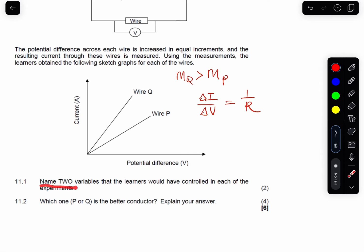Now it says name two variables that the learners would have controlled in each of their experiments. In other words, they're asking for the fixed variable, the control variable in this experiment. And obviously it's the temperature, and we can say the thickness, the thickness or the length of the wire. One of the last two, guys, any two in this.